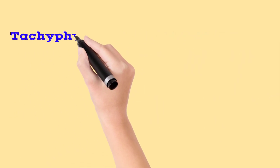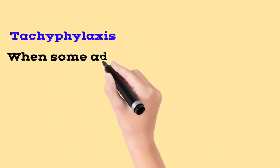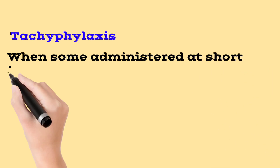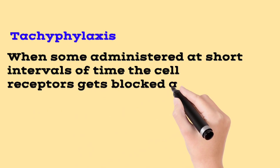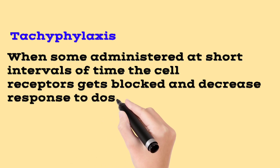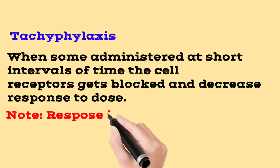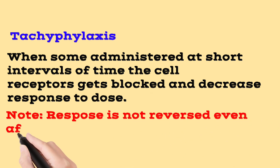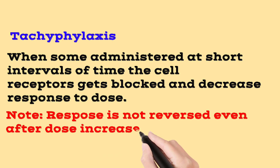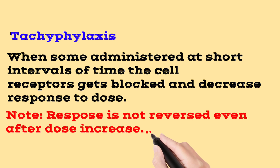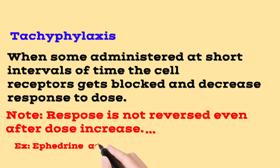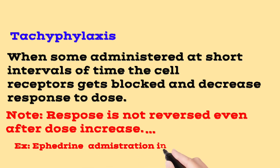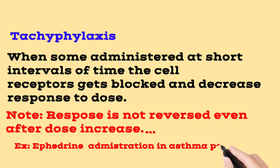Next is tachyphylaxis. Tachyphylaxis occurs when some drugs are repeatedly administered at short intervals. When drugs are repeated at short intervals, the cell receptors become blocked, and as a result the activity decreases.